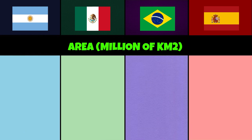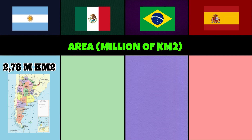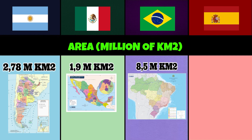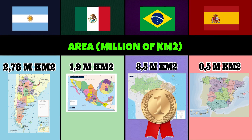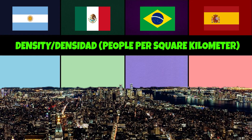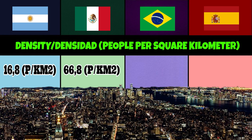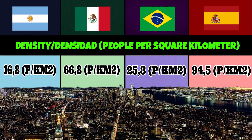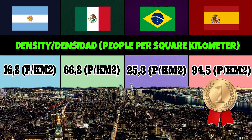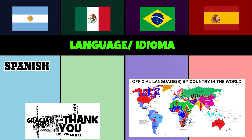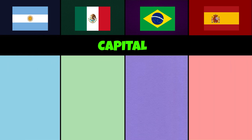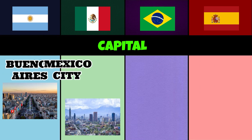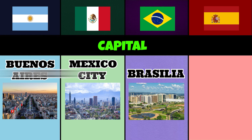Area in million square kilometers: 2.78 million, 1.9 million, 8.5 million, 0.5 million. Population density (people per square kilometer): 16.8, 66.8, 25.3, 94.5. Language: Spanish, Spanish, Portuguese, Spanish. Capitals: Buenos Aires, Mexico City, Brasília, Madrid.